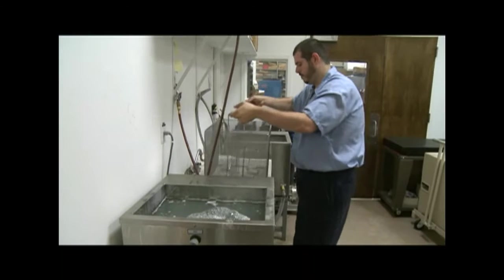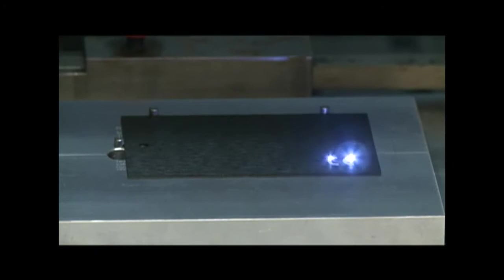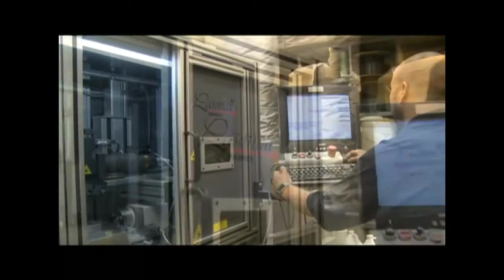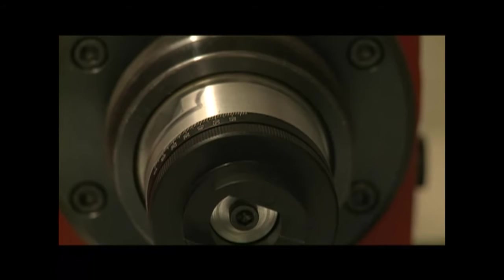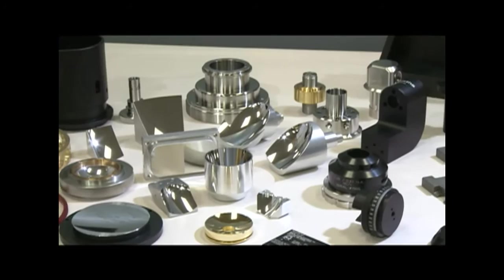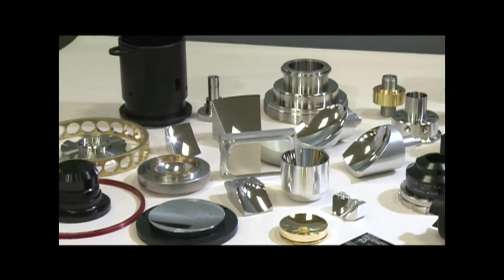Often, the final stage of building a part or part assembly is part marking, serialization, date coding and bar coding of special part numbers. To facilitate this, we have several ND YAG laser systems at KAF and can laser mark flat surfaces and curved surfaces and provide rotary marking as well. Many customers have us laser mark their logos and patent numbers on many of their parts.